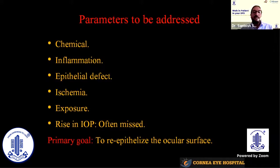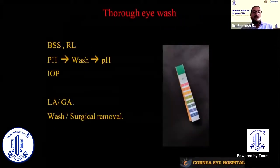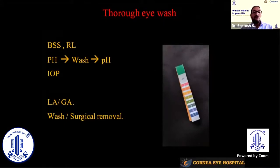Exposure due to skin contracture when chemical spills over the face is also important, and rise of IOP is one thing that is often missed. The primary goal during initial treatment is to rehabilitate the ocular surface. A thorough wash is very important — we can use Ringer's lactate or BSS, and a pH meter is very helpful. We should bring the pH to seven before stopping the wash.